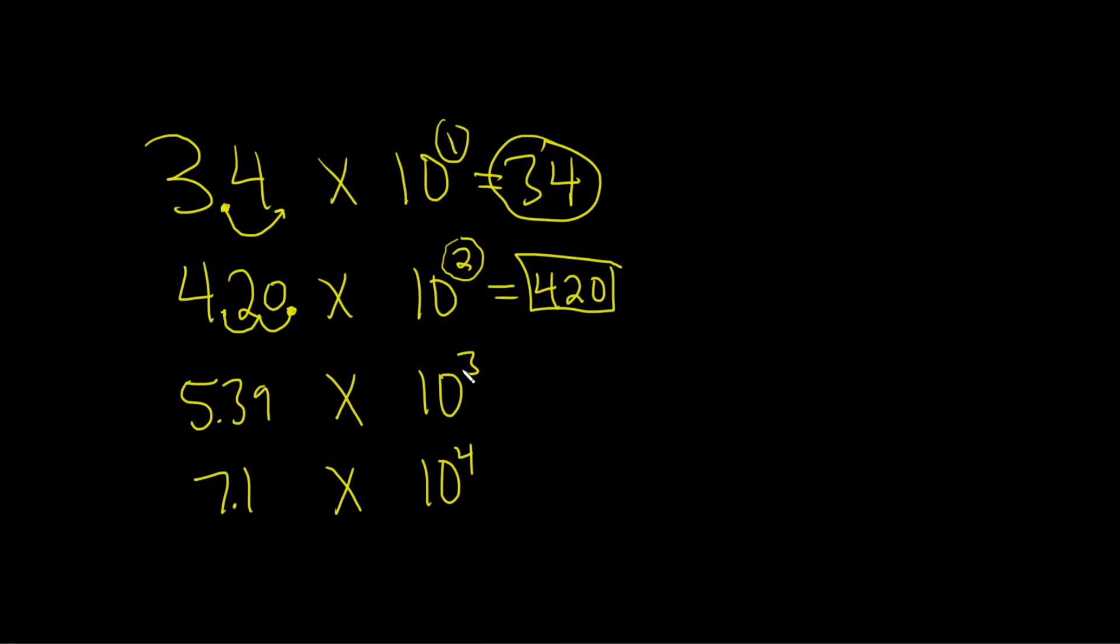This one is 10 cubed, which is 1,000. But the important thing is that it has three zeros. There's a 3 here. So that means you go three times. 1, 2, 3. Put a dot. This is equal to 5, 3, 9, 0.